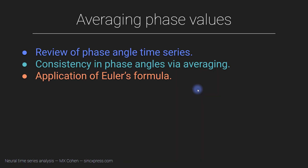In this and the next video, I'm going to talk about phase values, and in particular the phase angle time series, and how to work with it. This comes from the result of complex Morlet wavelet convolution. We are interested in the consistency of phase angles and the timing of phase angles over different trials or different stimulus repetitions. This will be a nice application of Euler's formula that you'll see towards the end of this video.